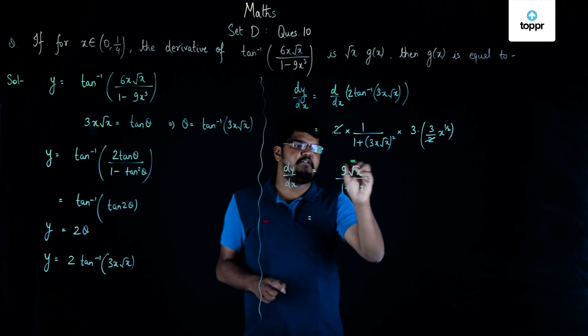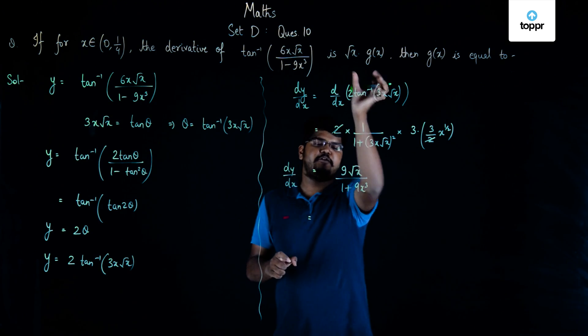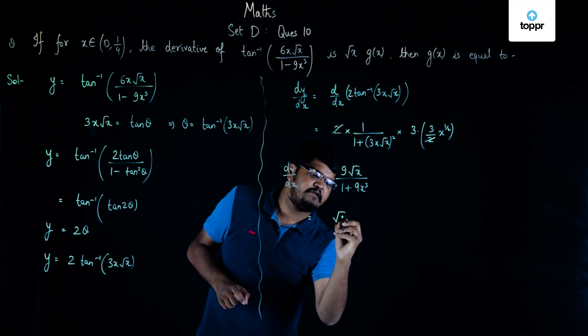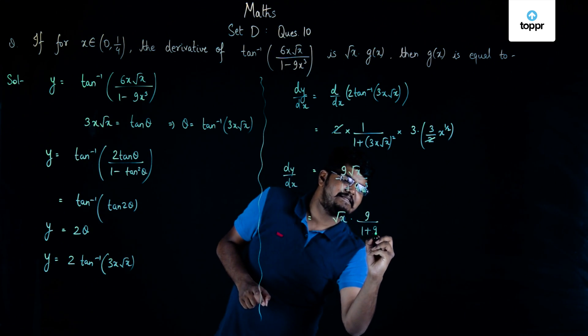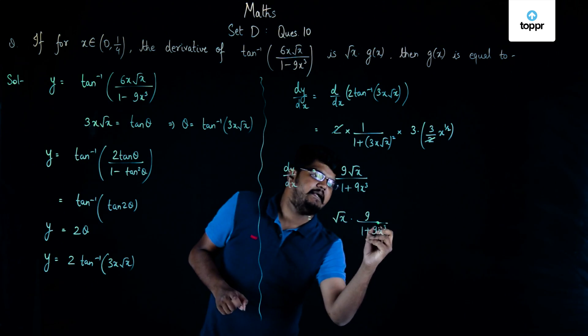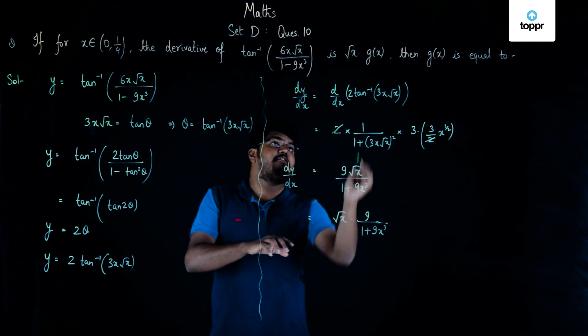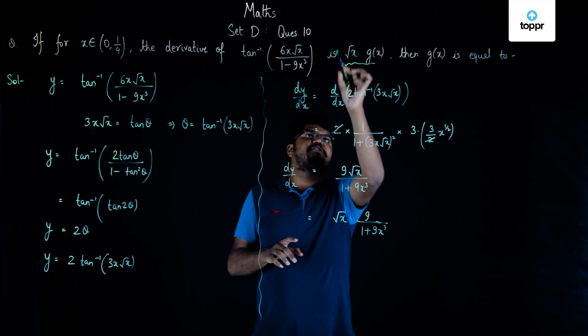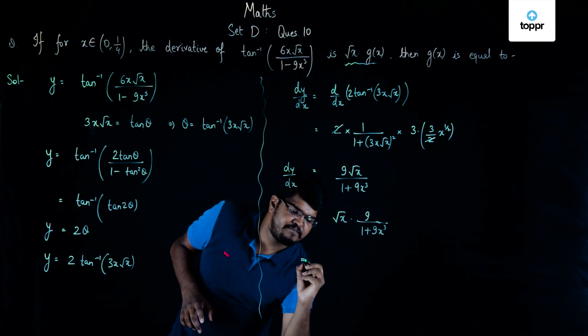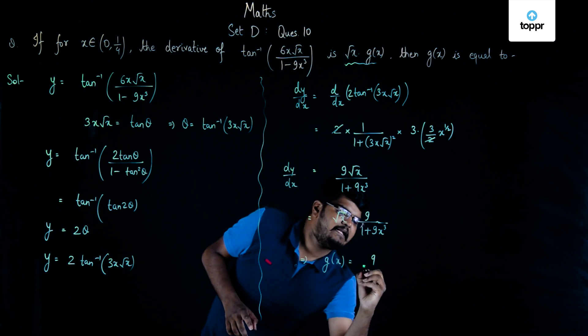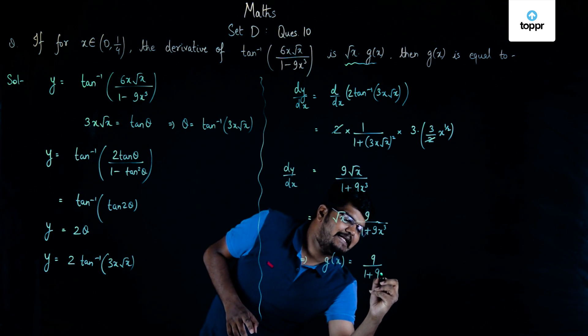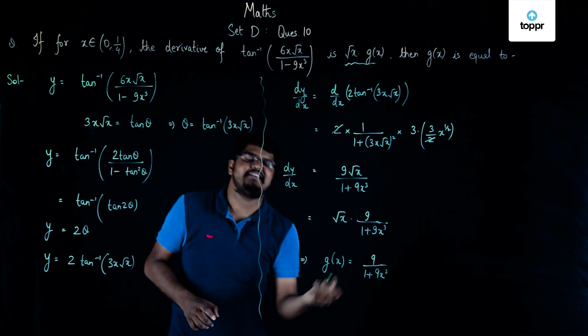Now we can rewrite this derivative in this form: it's actually equal to √x into 9/(1 + 9x³). And if we compare this with the expression given in the question, we can say that the value of g(x) is actually equal to 9/(1 + 9x³), and hence this is the correct option.